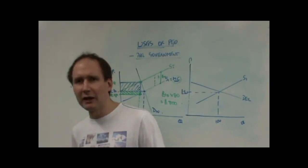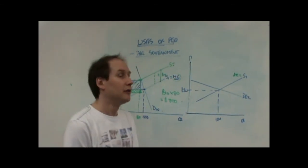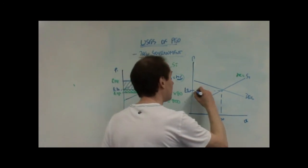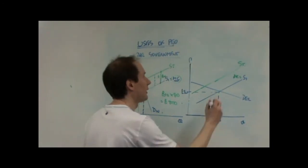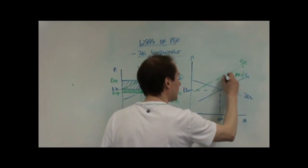If we do the same thing. Then, again, supply is marginal cost. If we do the same thing and impose a 10 pounds per unit tax. Then again, the supply curve, the firm's marginal costs increase by 10 pounds. So, that's 10 pounds. That's 10 pounds. That's 10 pounds.